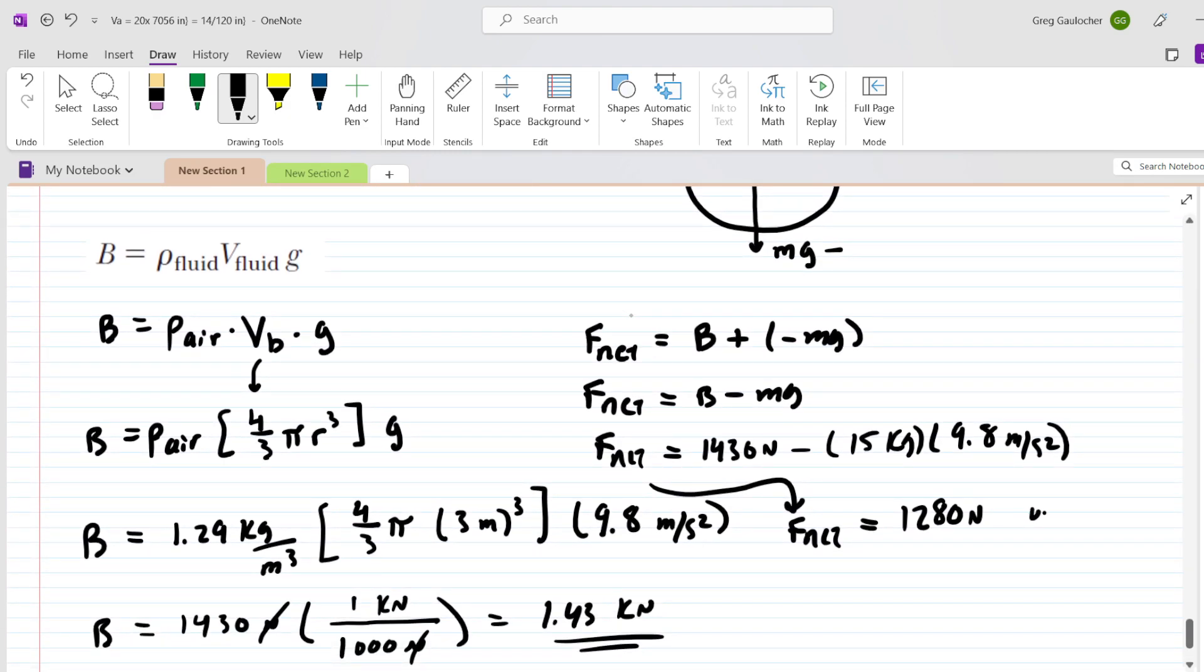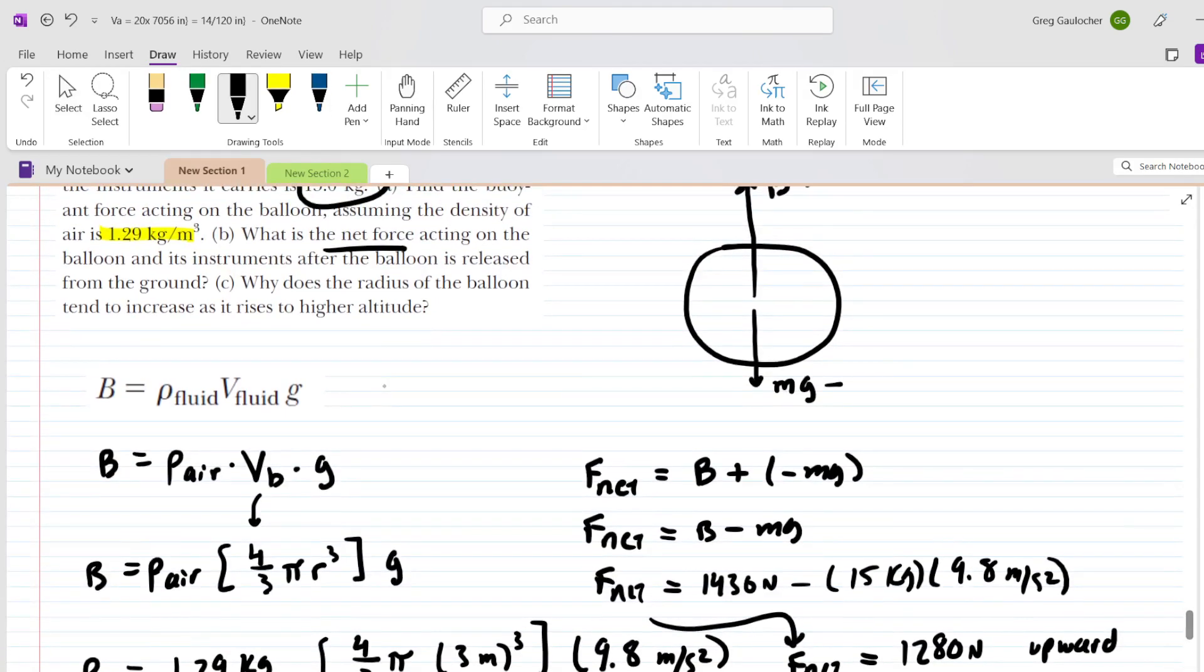If your homework system requires you to signify the direction, it would be upward. And then we can multiply that by 1 over 1,000 to get 1.28 kilonewtons as the final answer for part B. And then, at last, part C says, why does the radius of the balloon increase as it rises to a higher altitude?